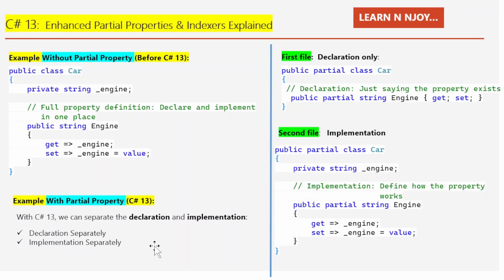In the first file, we declare a property like this: public partial class Car, public partial string Engine, get and set. The class is marked with the partial keyword, which indicates it can be split across multiple files — allowing better organization in larger projects. Inside this partial class, the property named Engine is also marked with partial so we can define how it works in a different file. The public access modifier means this property can be accessed from outside the class.